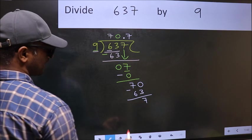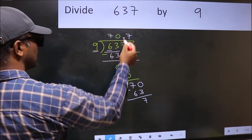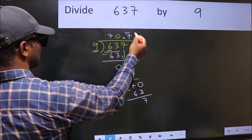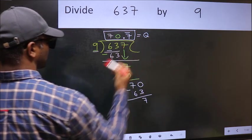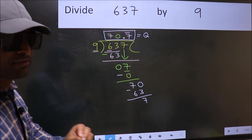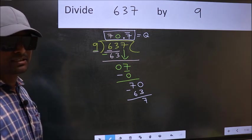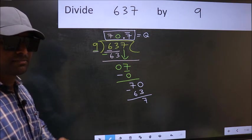We got 7 again. That means we get a repeating bar on this number. So this is our quotient. Did you understand where the mistake happens? You should not make that mistake.